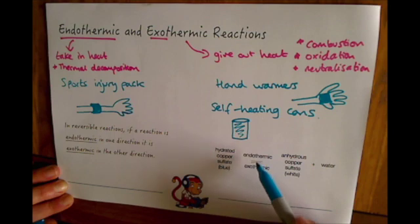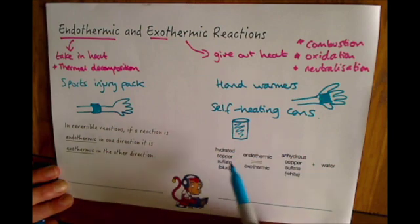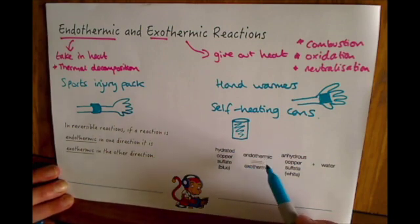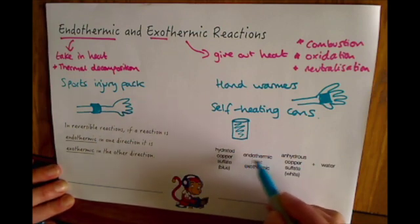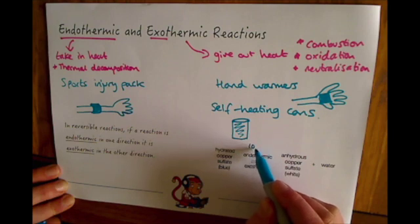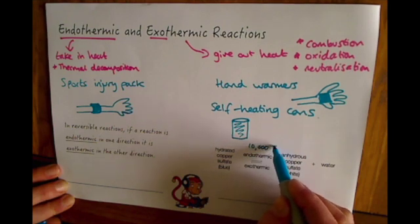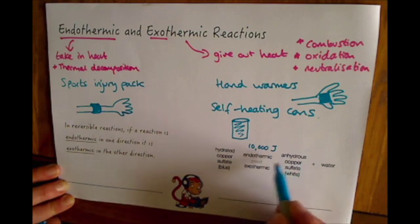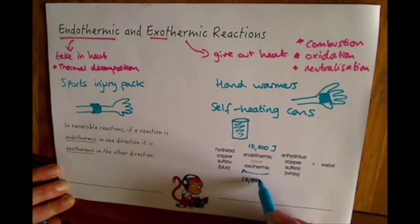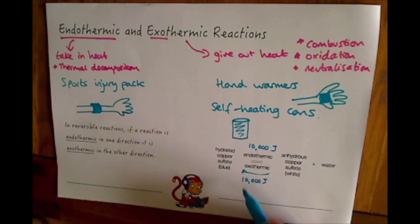In the opposite direction, it's exothermic. It's always opposite—if it's endothermic in one direction, it's exothermic in the other. The same amount of energy is taken in or released. For example, if 10,000 joules of energy is taken in one direction, then 10,000 joules would be given out in the reverse direction. It's a closed system in that respect.